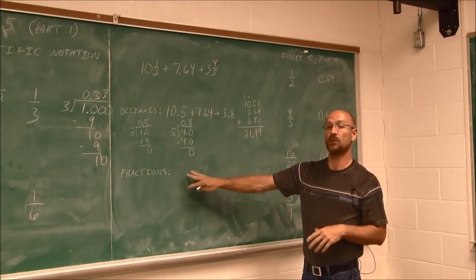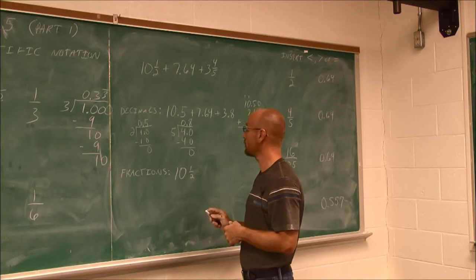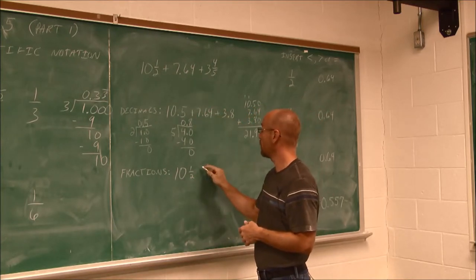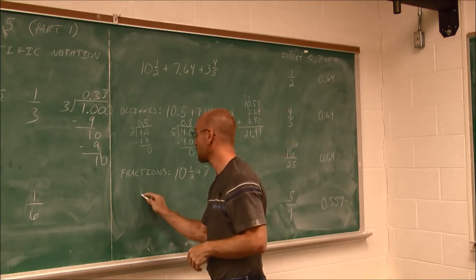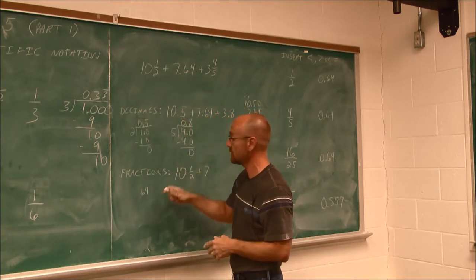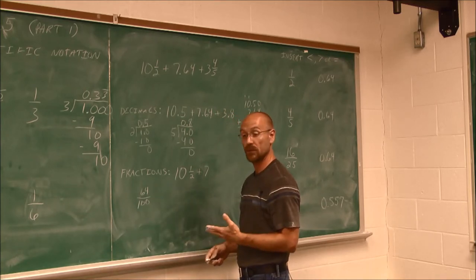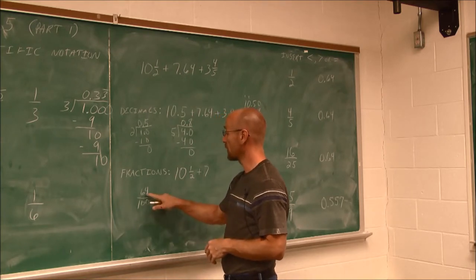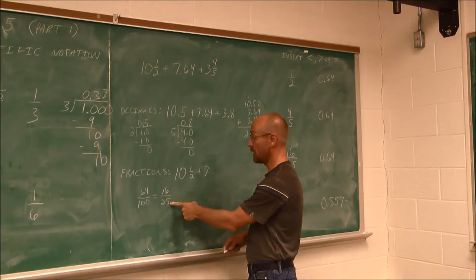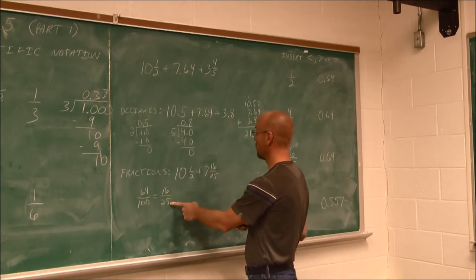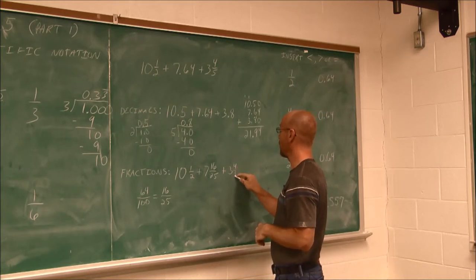What if we decided to use fractions instead? Honestly, I prefer to use fractions. The 10 and 1 half is already a fraction. 7.64, we can write 7. That 64, I'm going to write as a fraction. So it's 64 one hundredths. Now I can reduce this value. 64 and 100 are both divisible by 4. 4 goes into this 16 times. 4 goes into that 25. So I have 16 twenty-fifths.